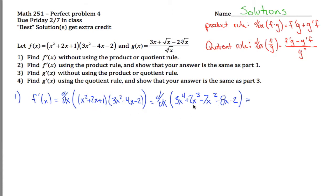The way to take this derivative is by applying the 3.1 rules: the derivative of a sum of things is the sum of the individual derivatives. The derivative of 3x to the fourth power is 3 times the derivative of x to the fourth, which is 4x cubed, so 3 times 4x cubed is 12x cubed. Similarly, the derivative of the second term is 6x squared, then minus 14x minus 8.